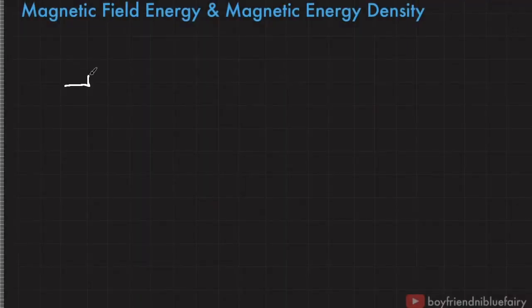We already discussed that the energy stored in an inductor is in the form of magnetic field. So when current passes through an inductor, it produces a magnetic field and the energy stored in the inductor is in the form of magnetic field.